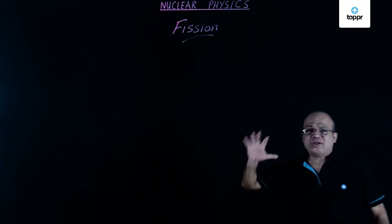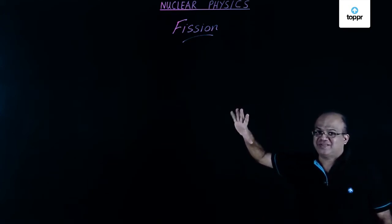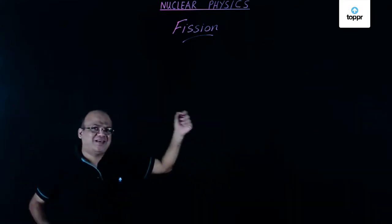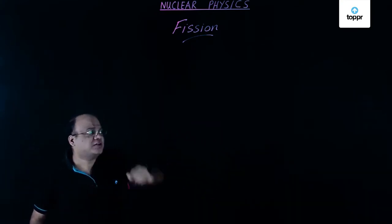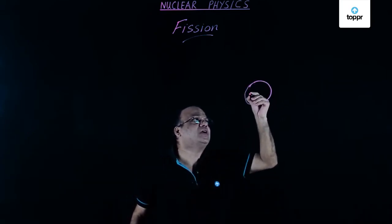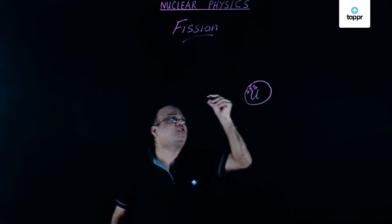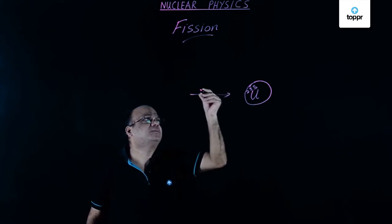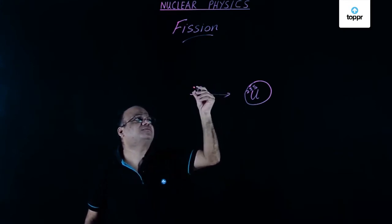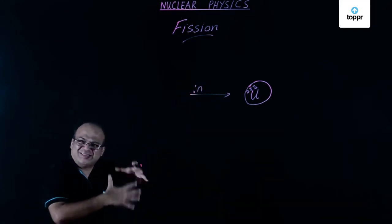In this lesson we are going to learn about nuclear fission. Fission means breaking up. Fission is initiated when a heavy nucleus like uranium-235 captures a slow neutron, that is also known as a thermal neutron, because the energy is in the thermal range.